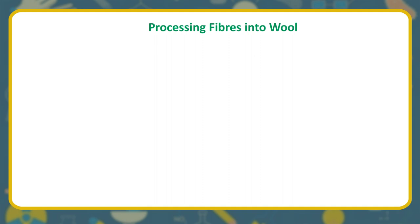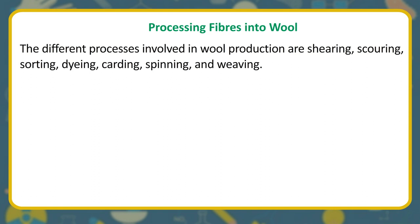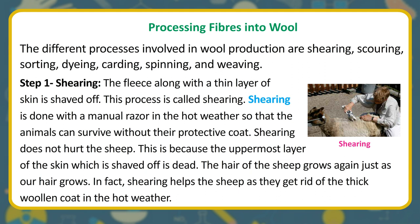The different processes involved in wool production are shearing, scouring, sorting, dyeing, carding, spinning, and weaving. Step 1 — Shearing: The fleece along with a thin layer of skin is shaved off. This process is called shearing and is done with a manual razor in hot weather so that the animals can survive without their protective coat. Shearing does not hurt the sheep because the uppermost layer of skin shaved off is dead. The hair grows again just as our hair grows. In fact, shearing helps the sheep as they get rid of the thick woolen coat in hot weather.